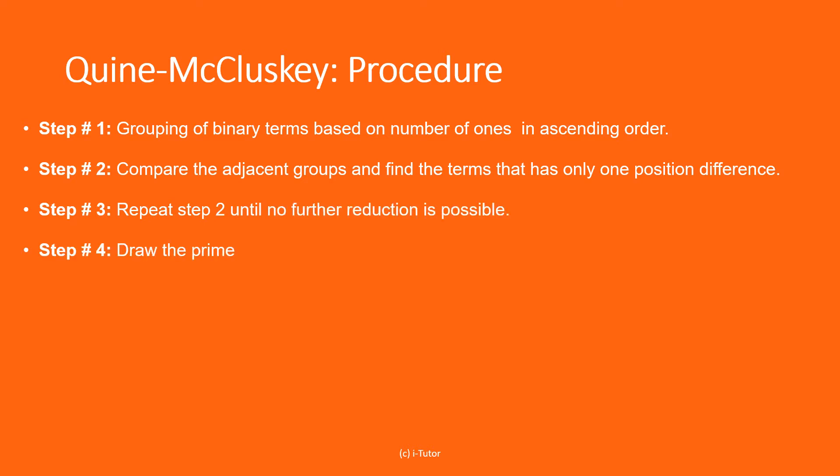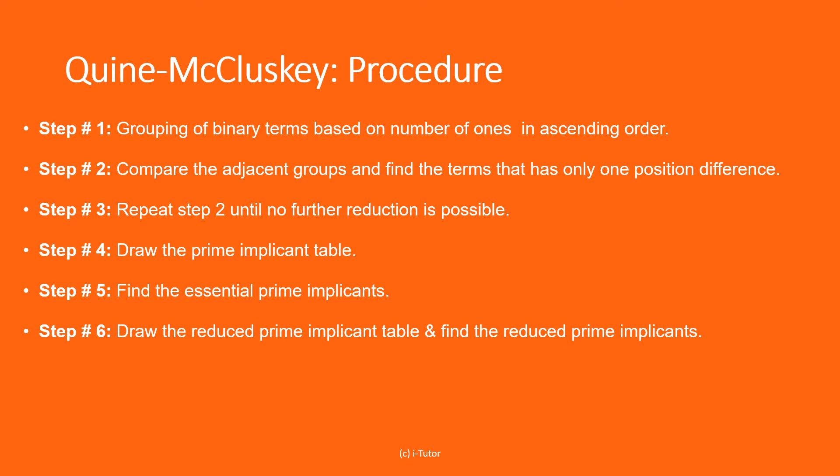Step number four, draw the prime implicant table. Step number five, find the essential prime implicants. Step number six, draw the reduced prime implicant table and find the reduced prime implicants. Step number seven, find the final boolean equation.